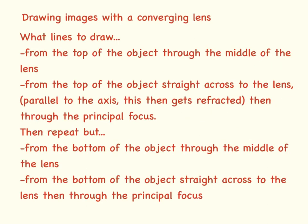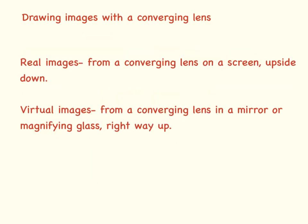These are the rules you need to follow whenever you draw diagrams using converging lenses. From the top of the object draw a line through the middle of the lens. From the top of the object draw a line straight across to the lens — parallel to the axis — which then gets refracted through the focus point. Repeat this from the bottom. Images produced with a converging lens are always real images when projected onto a screen such as an eye, and they will be upside down. If you're looking through a magnifying lens these are going to be virtual images, which are the right way up.